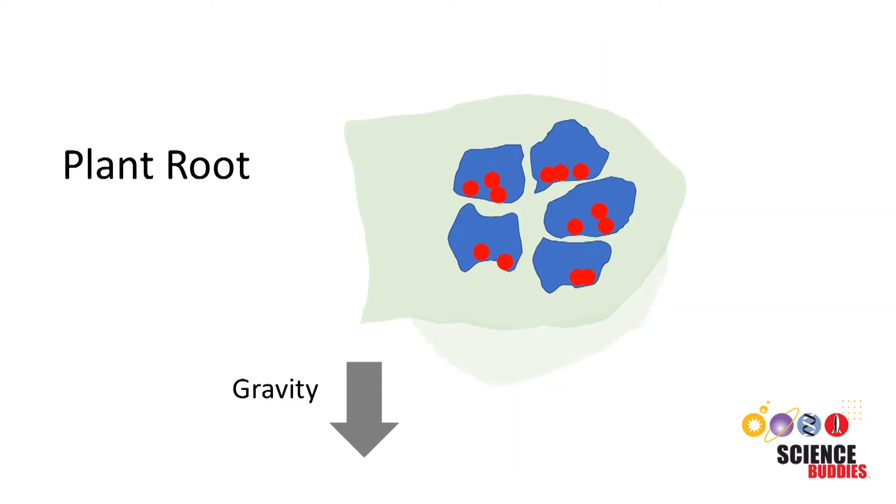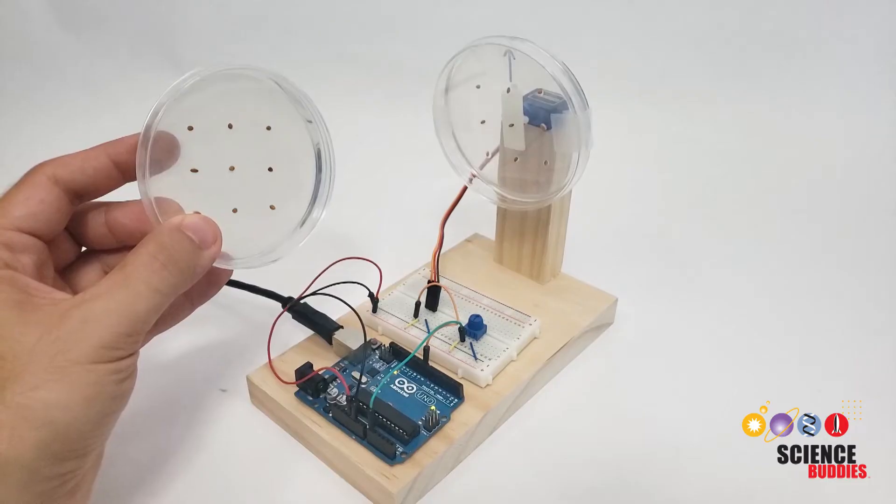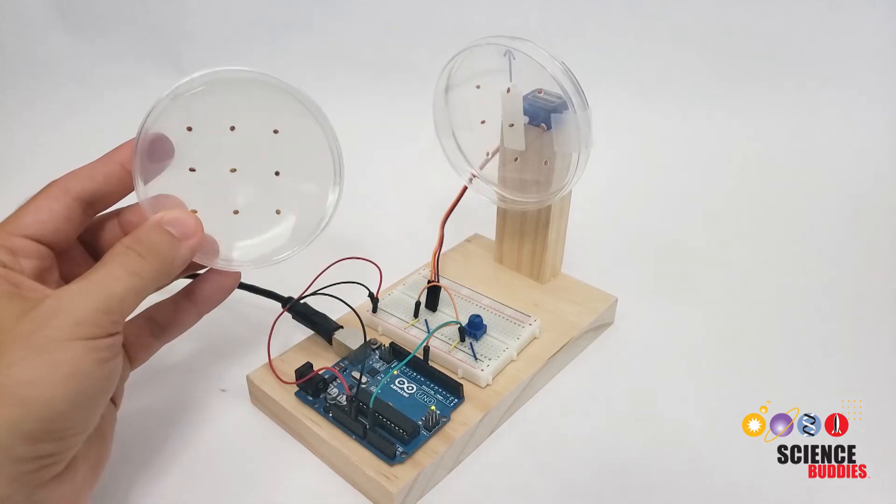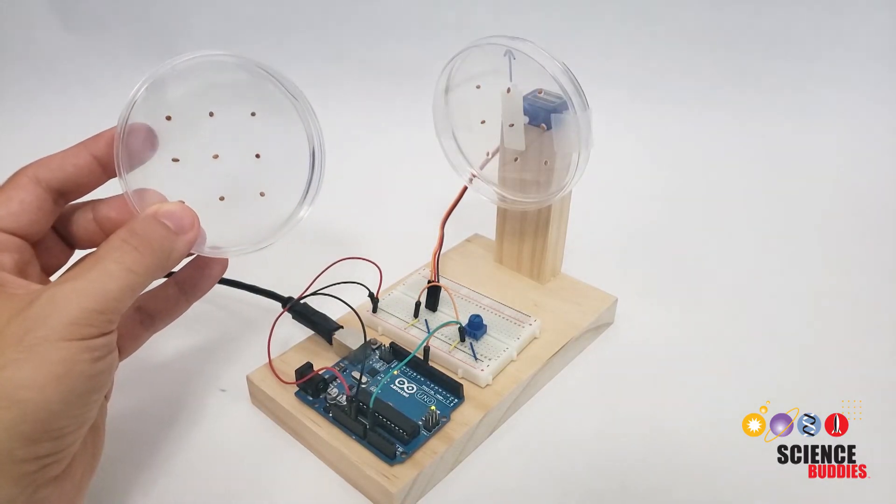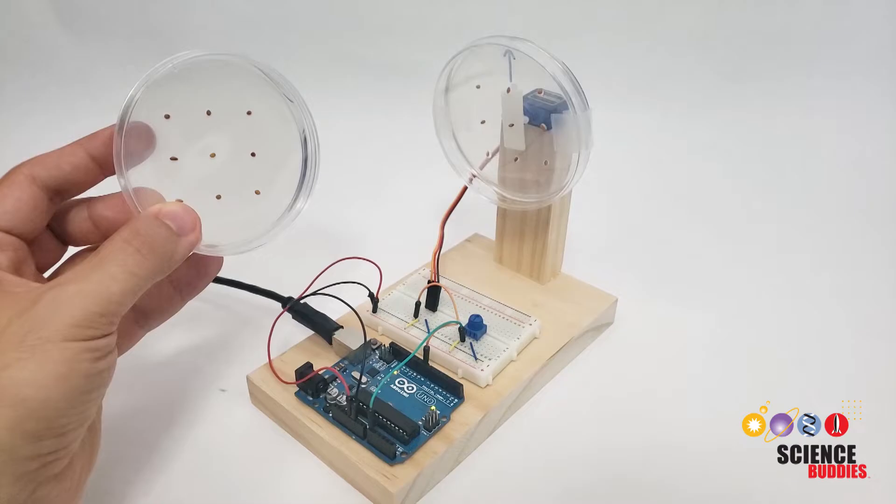However, rotating continuously and constantly changing the direction of gravity relative to the seed literally makes it so the seed cannot tell which way is up or down. This allows us to perform experiments here on Earth that simulate a microgravity environment and examine its effects on plant growth.